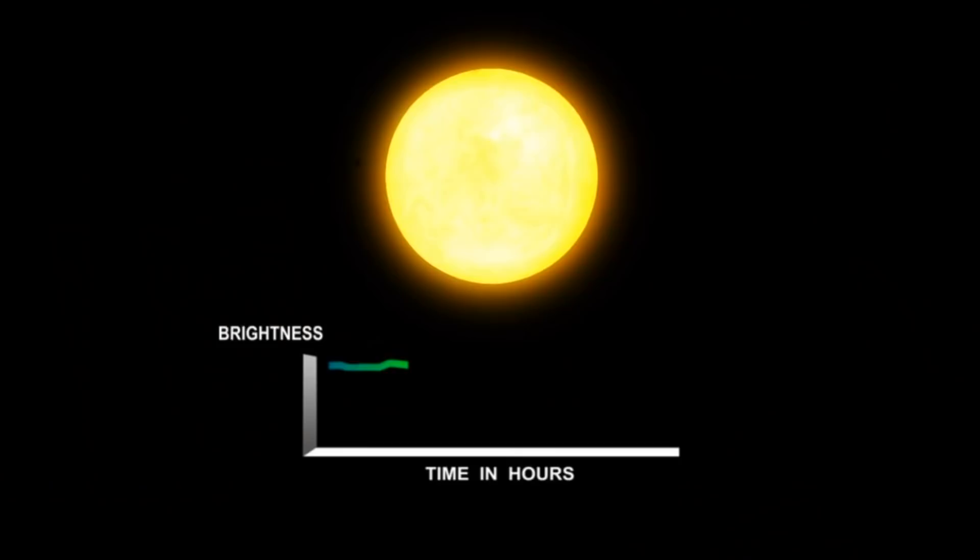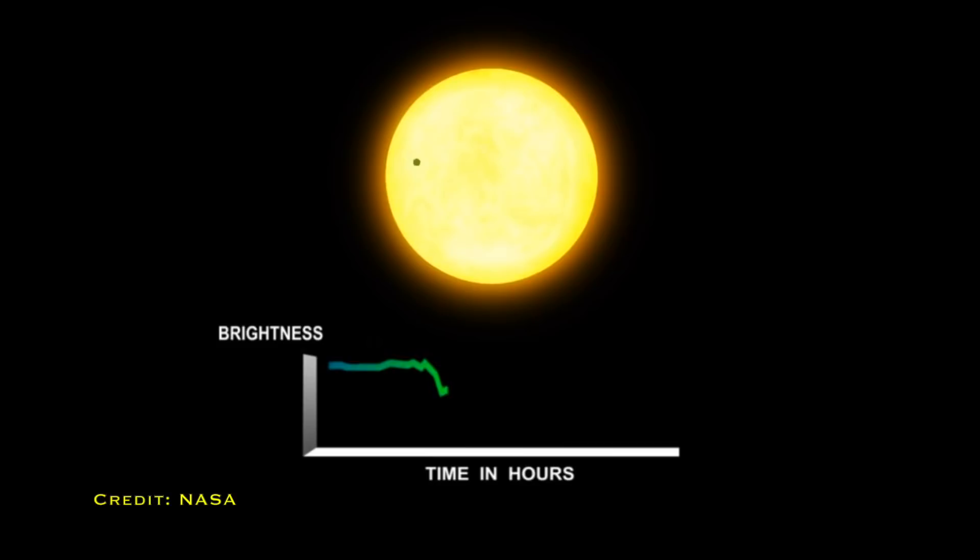The first one he suggested was that we study the brightness of stars and see if the brightness dips periodically. If the brightness dips, then perhaps a planet has actually passed in front of that star. If we see that same brightness dipping occur on that exact same repeatable timescale, then we can be sure that what we're seeing there is a planet orbiting its star.